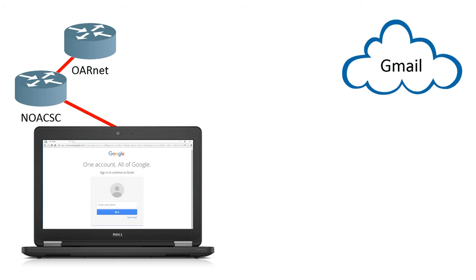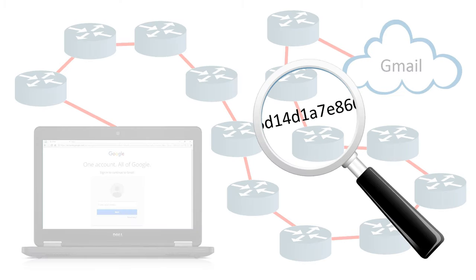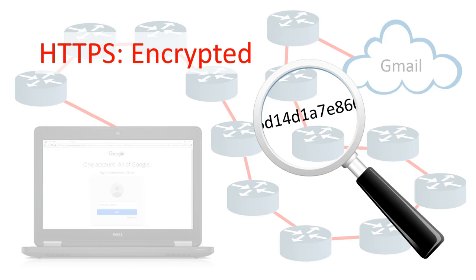If you were to check your Gmail, it takes 13 connections to get from Liberty Benton to Gmail, which means if any one of those connections were to intercept your information, they would be able to see exactly what you're typing. That's why anytime we're sending student information, anything that deals with personal information or money, we want to use HTTPS so that it's encrypted — they see gibberish and not our valuable information.